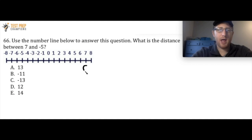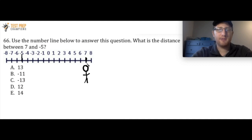For a number line question, here's the way I like to think about it. Imagine a stick figure person starting at 7, and they're going to take a walk to negative 5. How many steps do they take? We go from 7 to 6 — that's 1, then 2, 3, 4, 5, 6, 7, 8, 9, 10, 11, 12. That gives us the right answer — that's D.